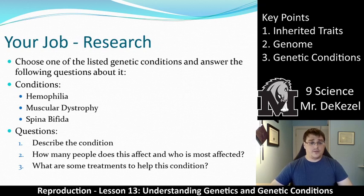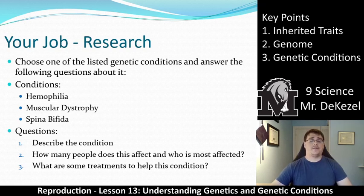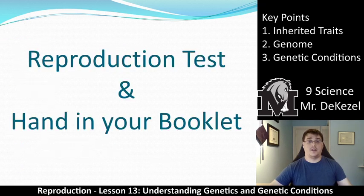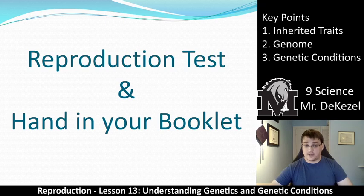What I'd like you to do is choose one of the conditions listed below — hemophilia, muscular dystrophy, or spina bifida — and answer the three specific questions for it. You only have to choose one condition. Explore how that condition affects people, what the condition is, and what some treatments might be. After you've done that, this is the end of the unit, so complete all assignments in your booklet and write the reproduction test when you're ready, then hand in the booklet.